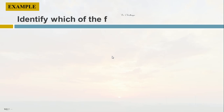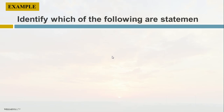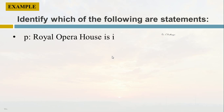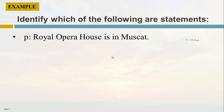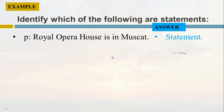Now let us take some small examples to make our understanding clearer. First, let us identify which of the following are statements. Take the sentence: 'Royal Opera House is in Muscat.' We are able to say yes or no, so this is a statement.